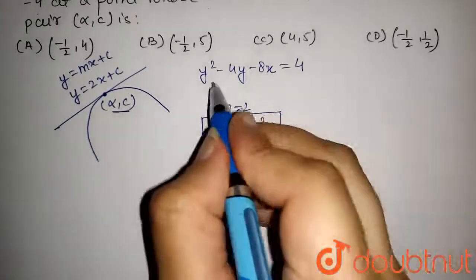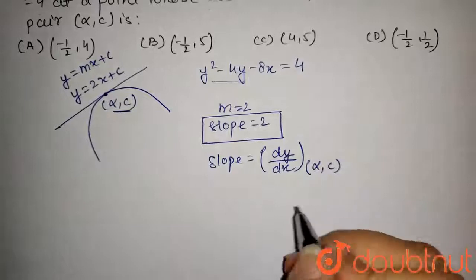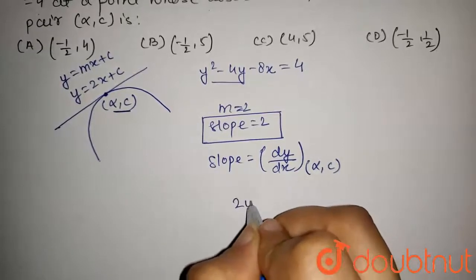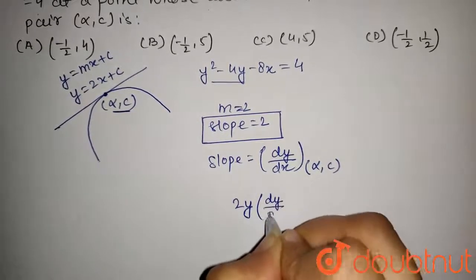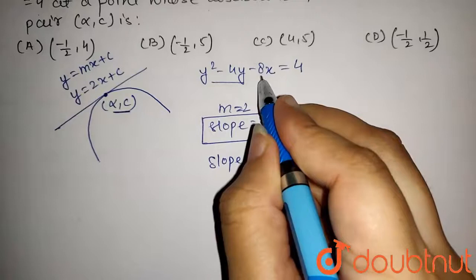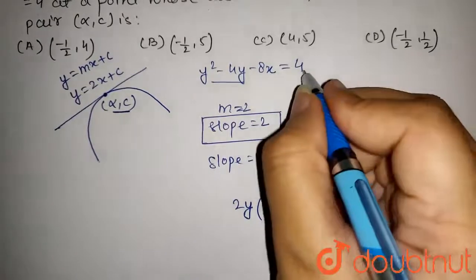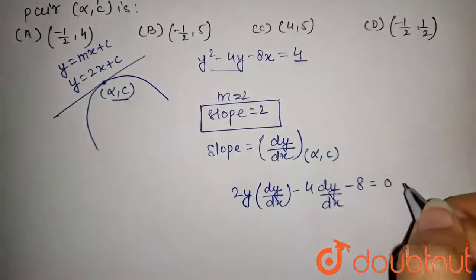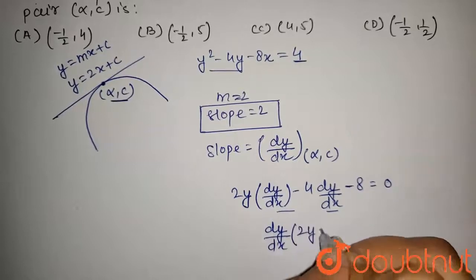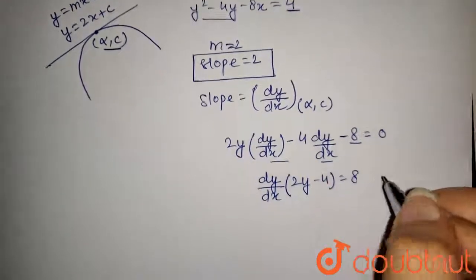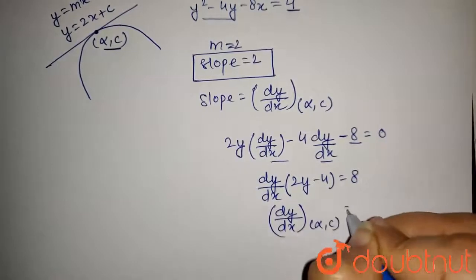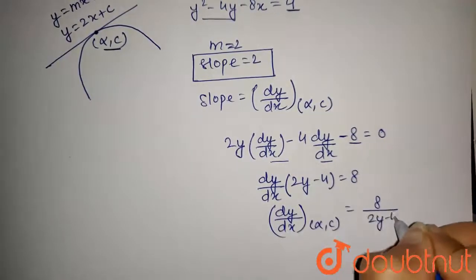To find the slope, we differentiate the equation with respect to x. Differentiating, we get 2y(dy/dx) - 4(dy/dx). Differentiation of -8x is -8, and 4 is constant so its differentiation is 0. Taking dy/dx common, we get dy/dx(2y - 4) = 8, or dy/dx at point (alpha, c) = 8 / (2y - 4).